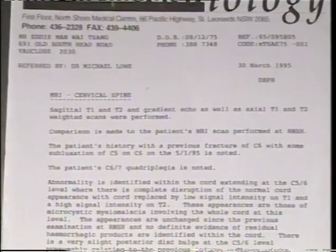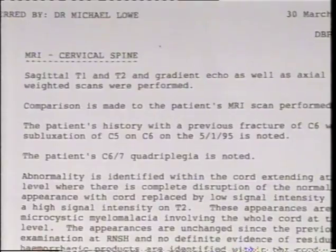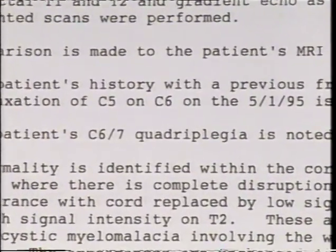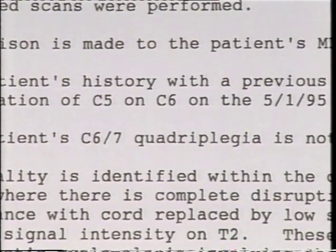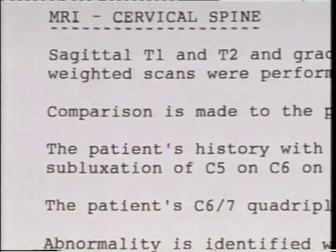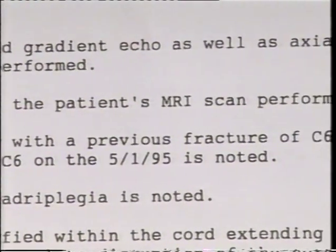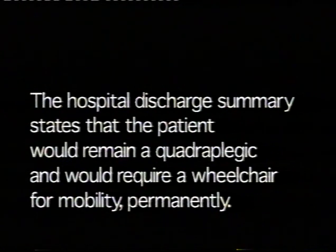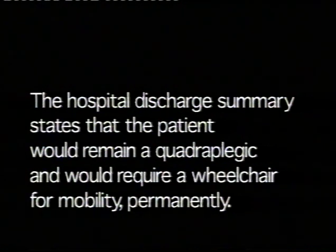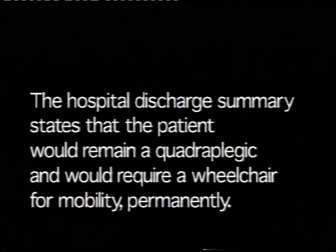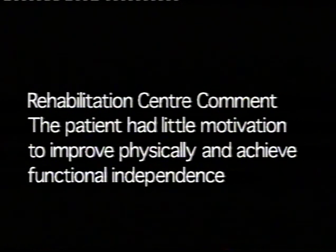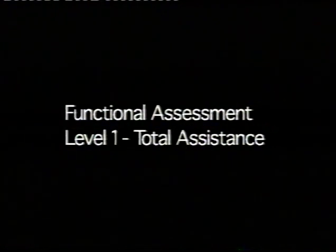Hospital diagnosis: spinal cord injury, fracture at C6, forward subluxation of C5 and C6, C6 complete transsection lesion quadriplegia. The discharge summary from hospital states that the patient would remain a quadriplegic and would require a wheelchair for mobility permanently. The comment from the rehabilitation centre was that the patient had little motivation to improve physically and achieve functional independence. His functional assessment was level one — total assistance.